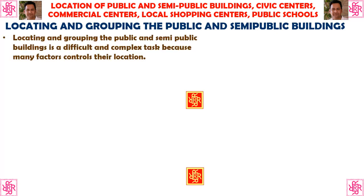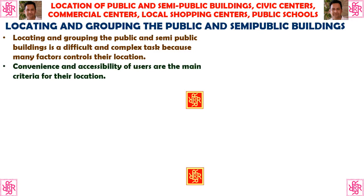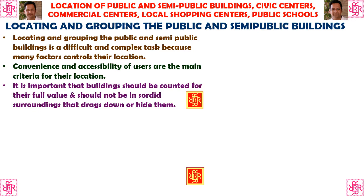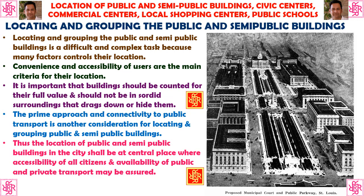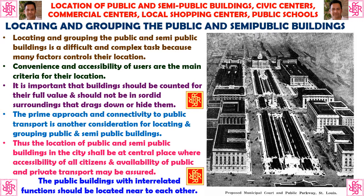Locating and grouping public and semi-public buildings is a difficult and complex task because many factors control their location. Convenience and accessibility of users are the main criteria. It is important that buildings should be counted for their full value and should not be in sordid surroundings that drag down or hide them. Prime approach and connectivity to public transport is another consideration. The location of public and semi-public buildings in the city shall be at a central place, with accessibility for all citizens and availability of public and private transport assured. Public buildings with interrelated functions should be located near to each other.